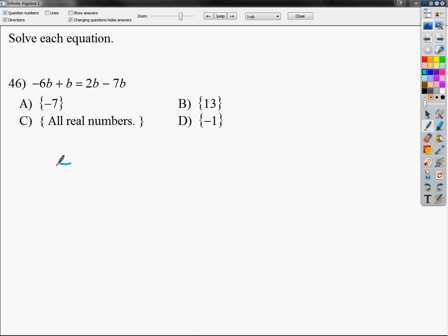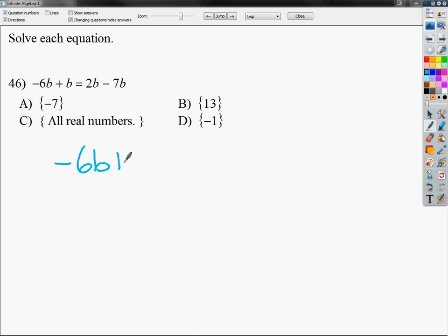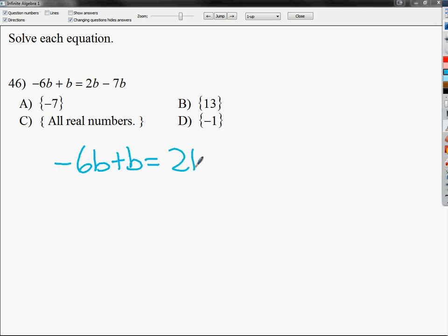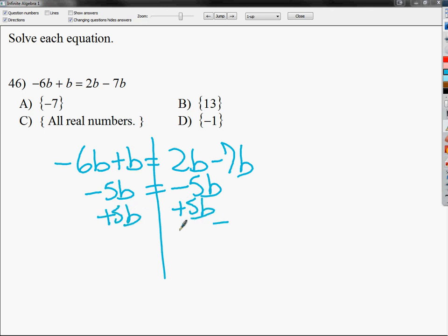Number 46 is the next one I'm going to look at. So I get -6b + b = 2b - 7b. I'm going to draw my line. -6 + 1 gives me -5b. 2 - 7 is -5b. Now, if I get rid of plus 5b on this side and on this side, I'm left with 0 = 0. Well, 0 does equal 0, and I eliminated my variable, so my final answer is all real numbers.